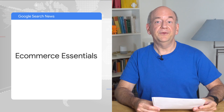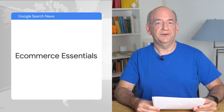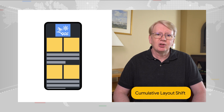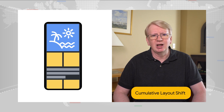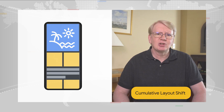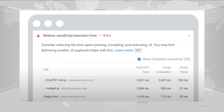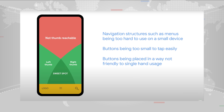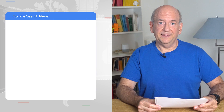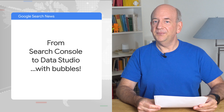Starting off, we recently launched a new video series for e-commerce sites called E-commerce Essentials. The first episode is about one of the most critical elements for user experience: images. E-commerce sites use a lot of images, so this is an important topic. There are also episodes about optimizing JavaScript, making sure the site is mobile-friendly, and more. While these focus on e-commerce sites, you can use the information in them for any kind of website, including yours.